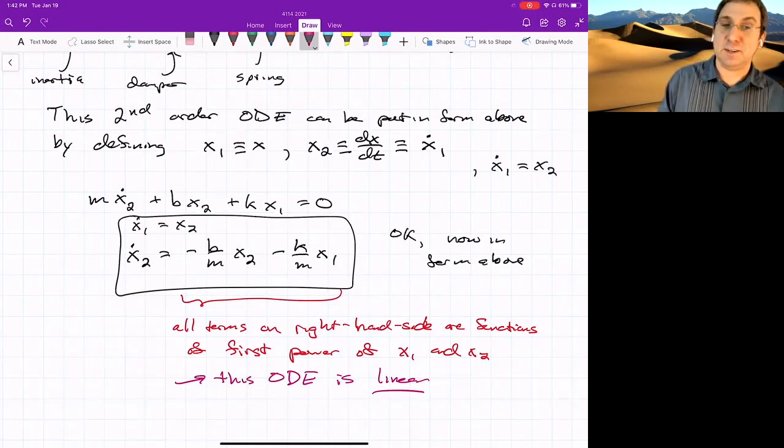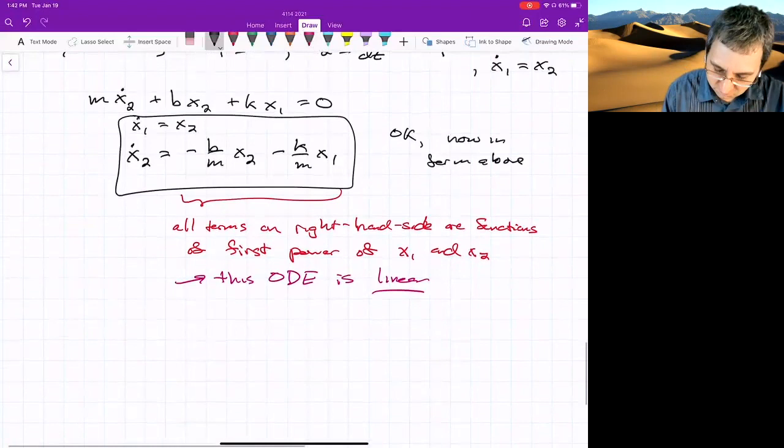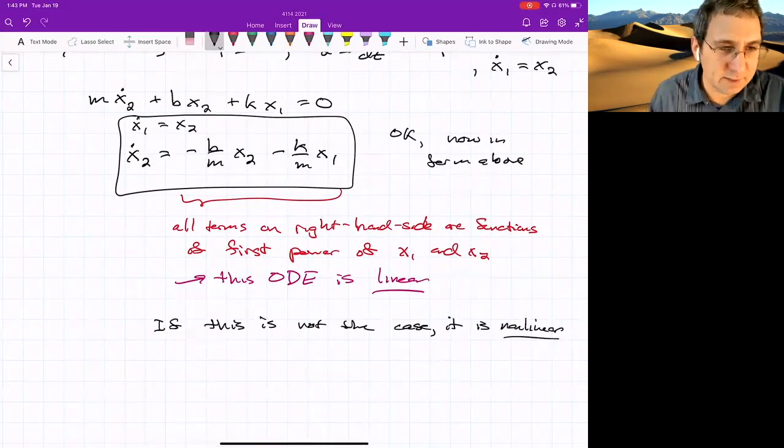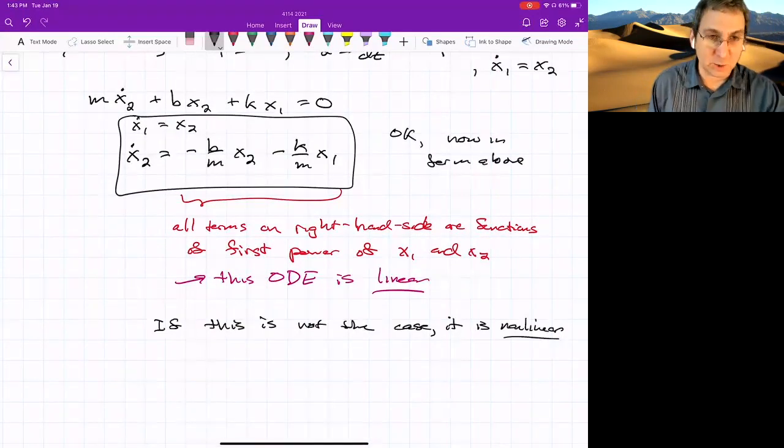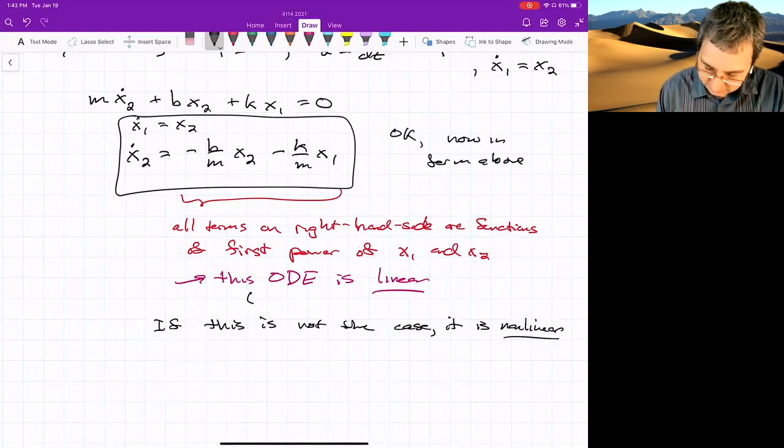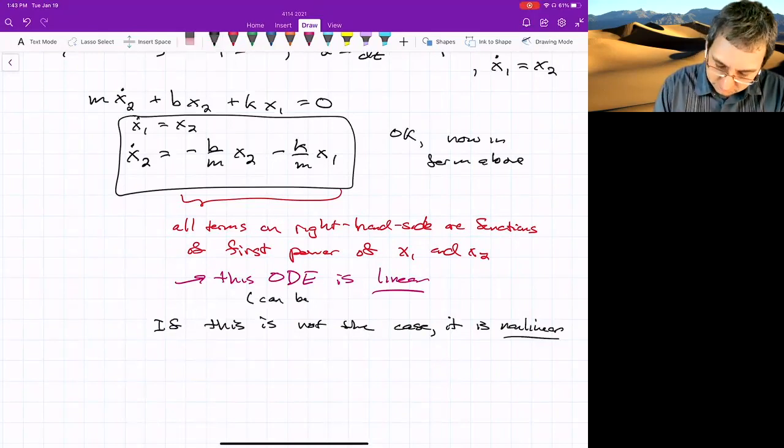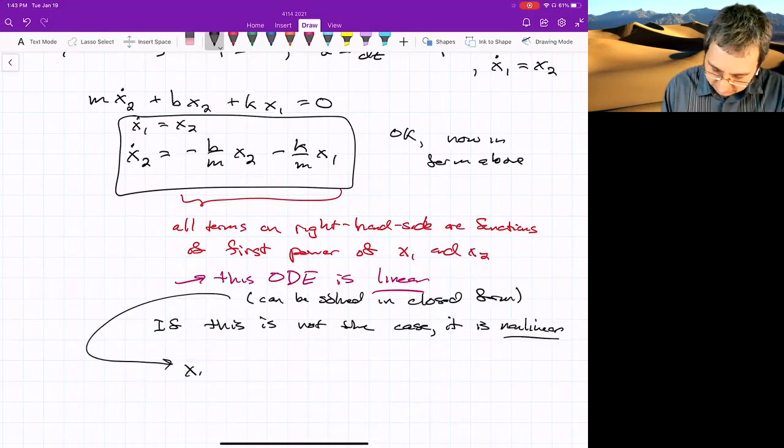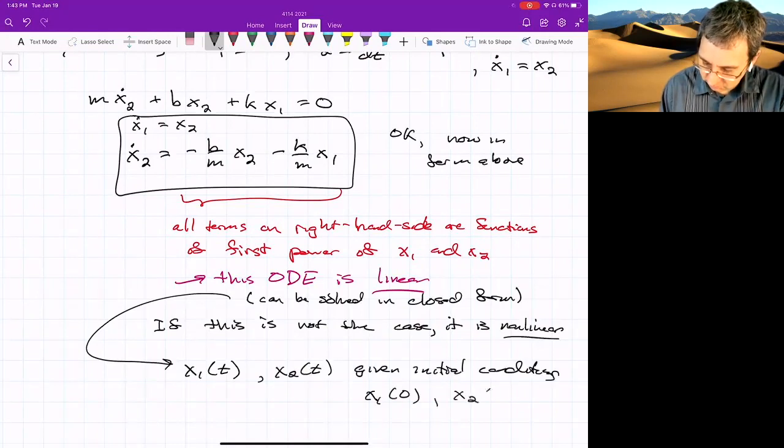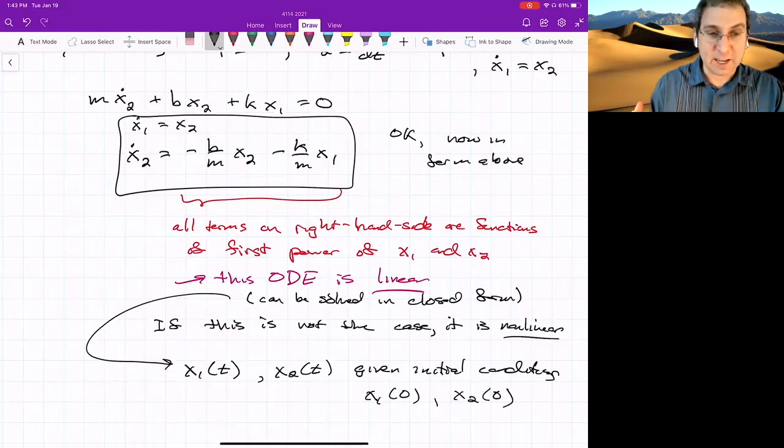If this is not the case, then the system is said to be non-linear. And there are tools for solving ODEs that are linear. So we can solve them in closed form. Can be solved in closed form. And what do we mean by that? If something can be solved in closed form, that means that you write x1 as a function of time, x2 as a function of time given initial conditions, x1 at time zero and x2 at time zero. That's what's so nice about linear things. The problem with non-linear things is you can't do that.